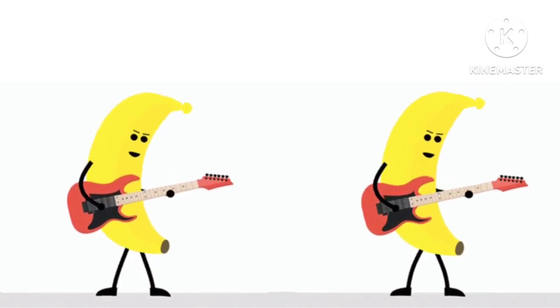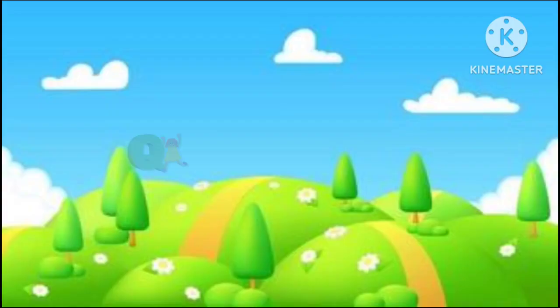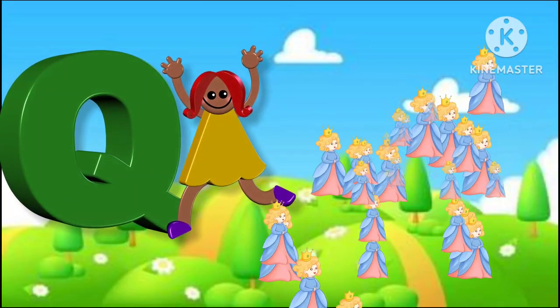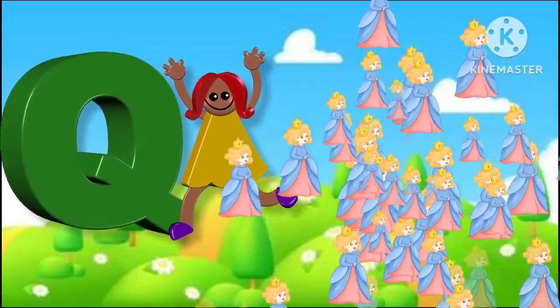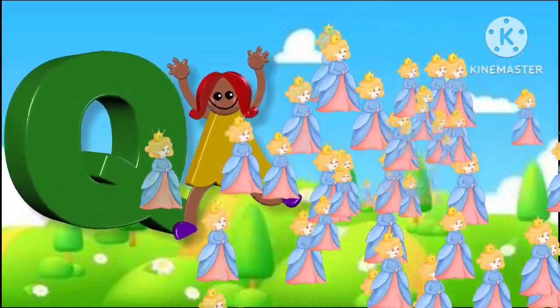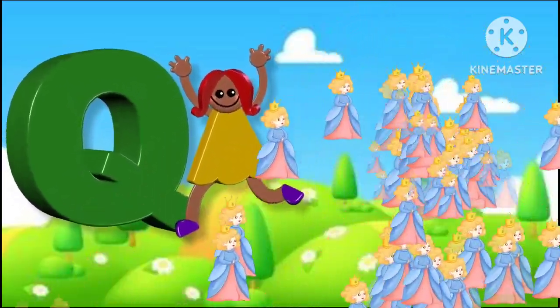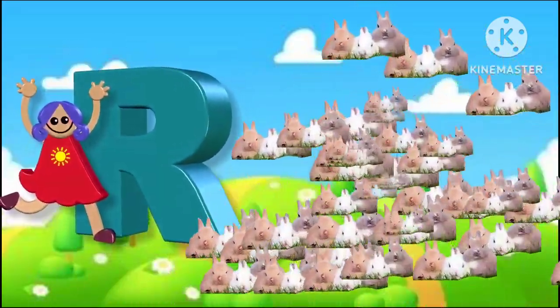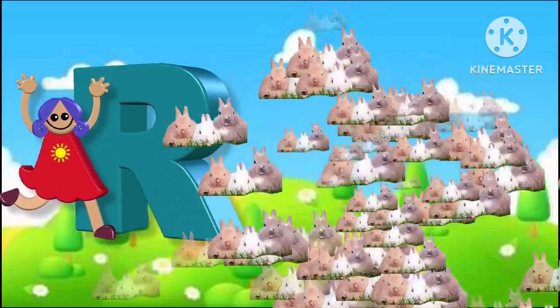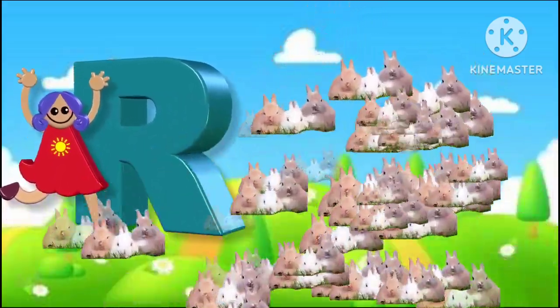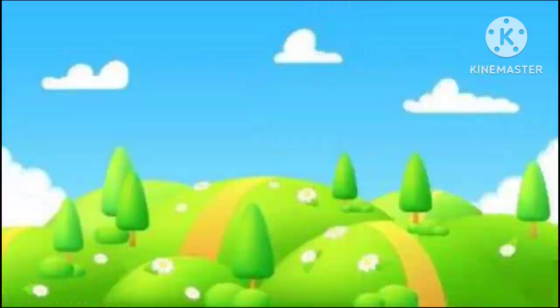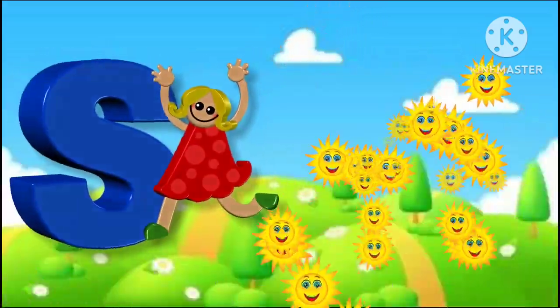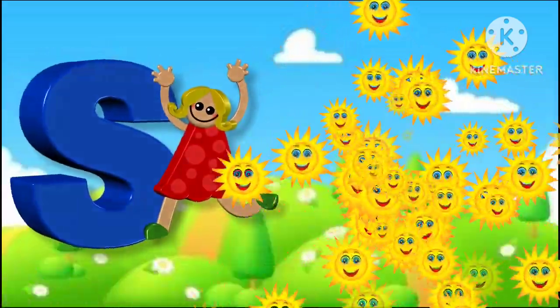Q is for queen, k-k-queen. R is for rabbit, r-r-rabbit. S is for sun, s-s-sun.